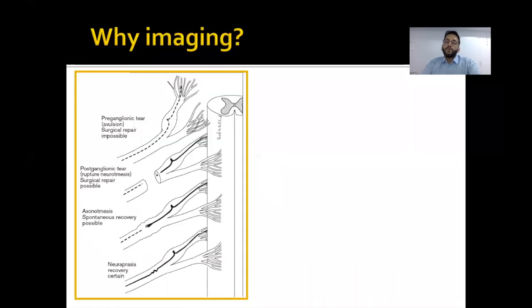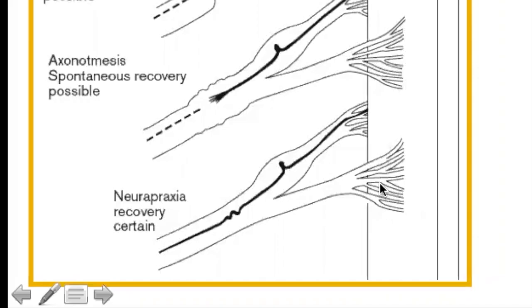So why do we need to do imaging of patients with brachial plexus injury? And what do we tell the surgeons after doing the imaging? So this is an illustration showing the different forms of injury. The image on the bottom here shows neuropraxia. The nerve rootlets are intact. The nerve itself is intact. When there is some stretch in the axons or edematous change in the nerve, these patients have got complete recovery.